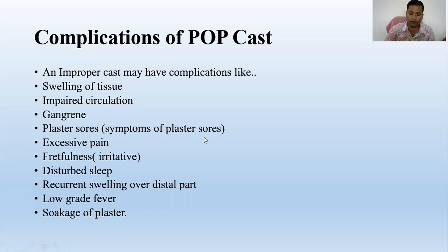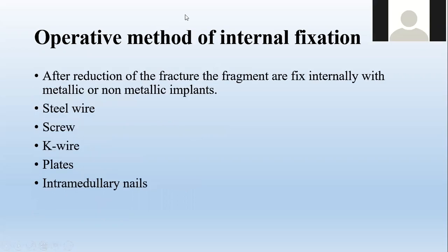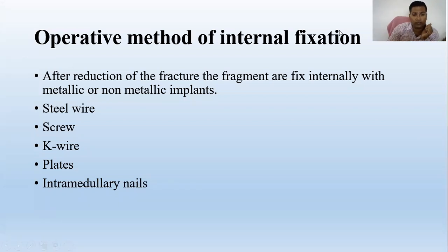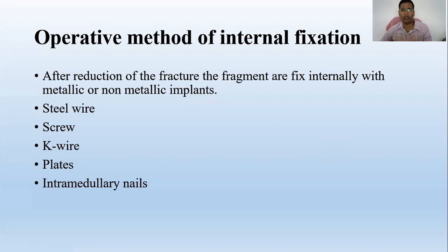Next, we are discussing the closed methods of fixation where no surgical operation is required to fix or immobilize the fracture. There are also operative implants which are used to fix the fracture segment after giving an incision, opening the fracture site, and applying implants such as steel wire, screws, K-wire, blades, and intramedullary nails to fix the fragments.